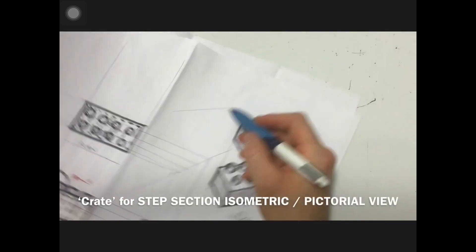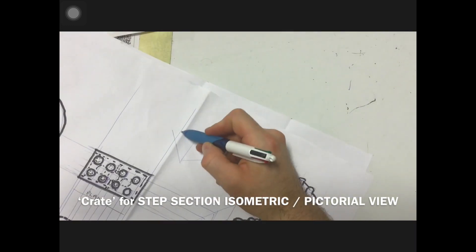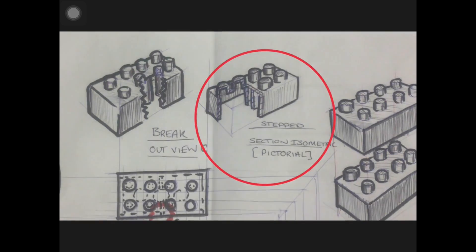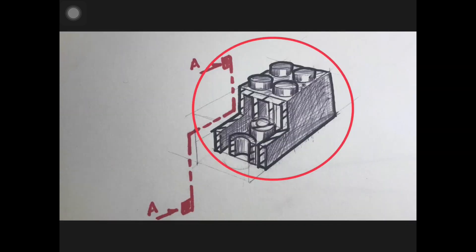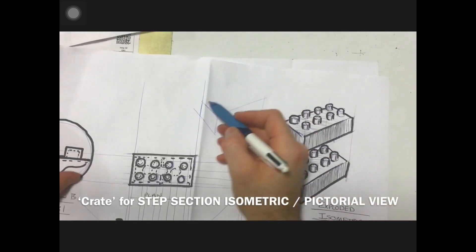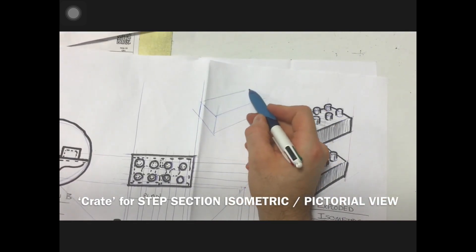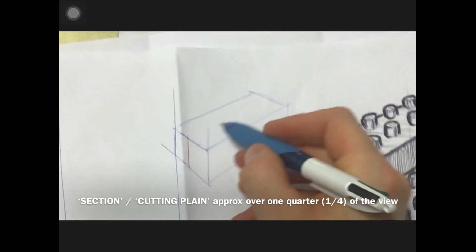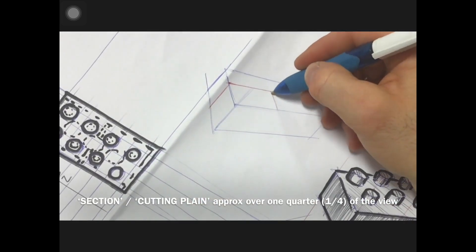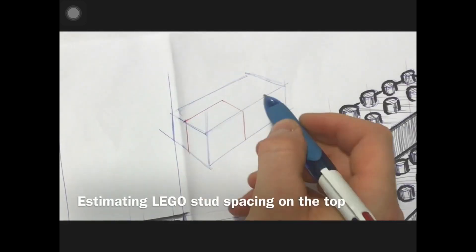Another type of view that can be done to assist with manufacture is a step section isometric view or pictorial view. I'm going to start by drawing my isometric crate again, and in this view, different from the one that we've already drawn in orthographic, I'm going to put the section along the middle quarter of the view and then add on the studs at the top.